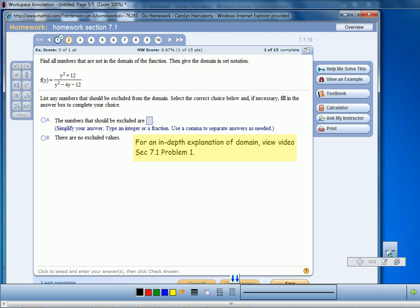Now recall that when we're looking for values that are not part of the domain, what we're really doing is finding values for Y that would cause a zero to appear in the denominator.